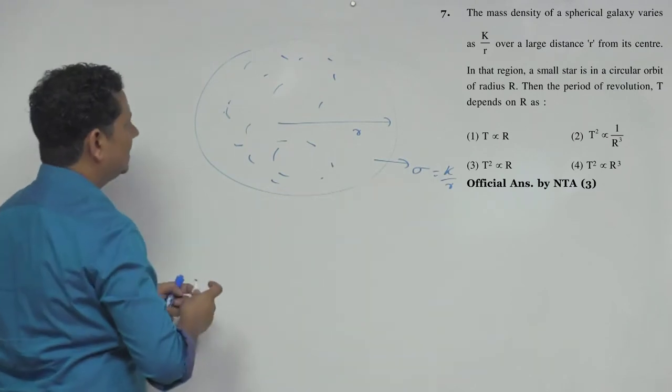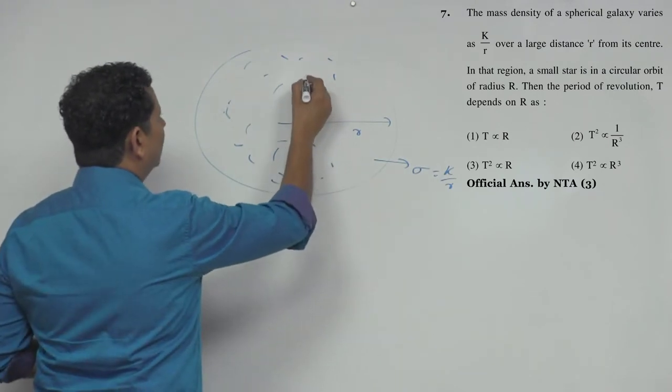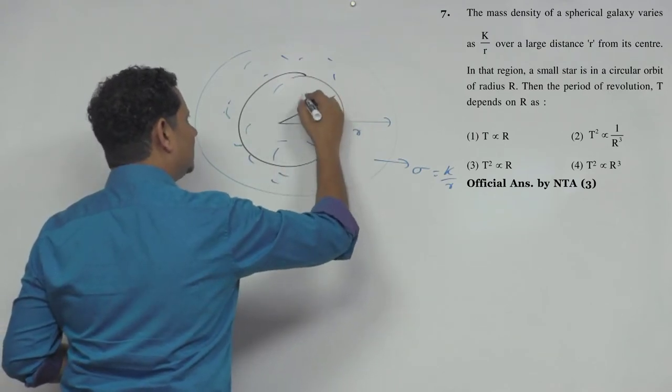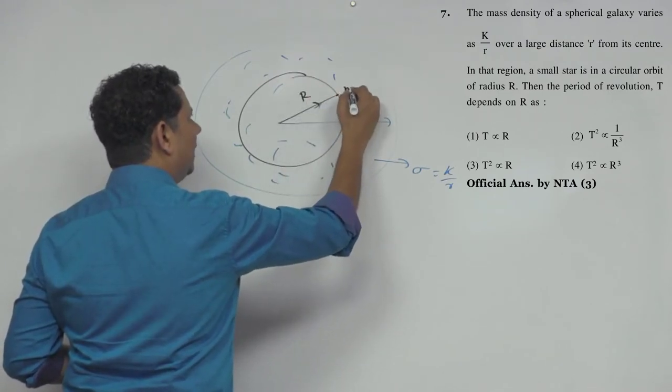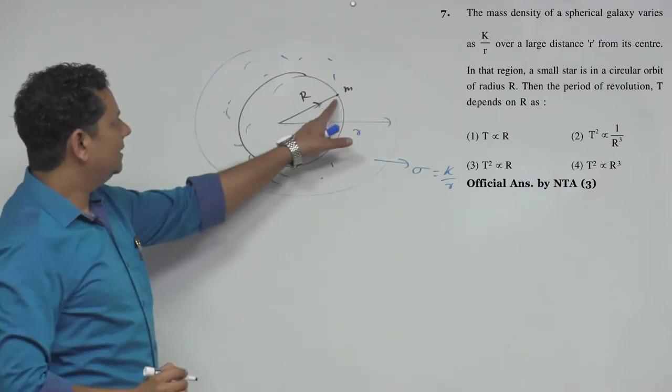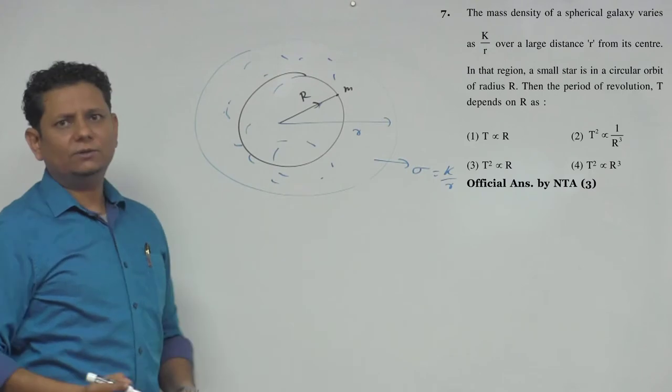Now there's a small star at some radius, let's say at this radius, going around. Its radius is r, mass is m, and it's doing circular motion.